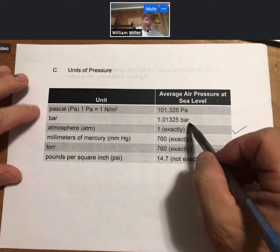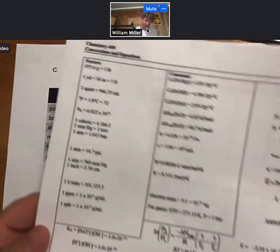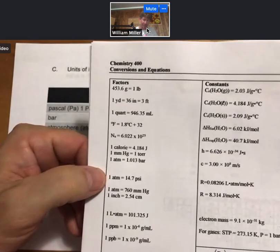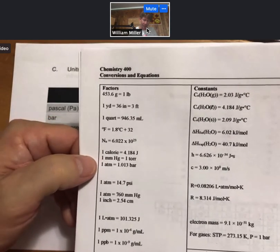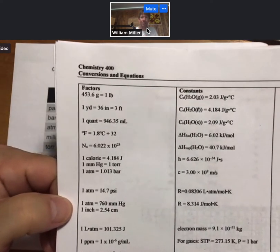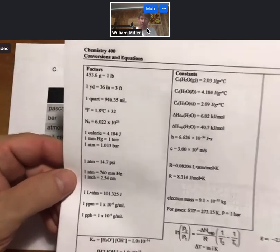You'll find that most of the units you need are on the conversions and equations sheet. We have atmospheres to PSI, millimeters of mercury to torr, to bar, and so use this when you're solving problems and on the homework or quizzes or exams.